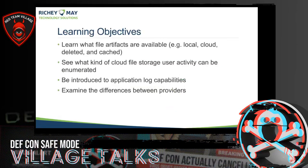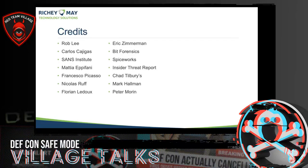Some of the learning objectives we're going to go over in this talk: we're going to learn what file artifacts are available in cloud file storage applications, see what kind of cloud file storage user activities we can enumerate during a penetration test, be introduced to application logs and what's available there, and examine the difference between cloud file storage providers. First, I want to give credit where credit is due — some of this I came up with from my own testing, from forensic cases, as well as reading from other people's work.